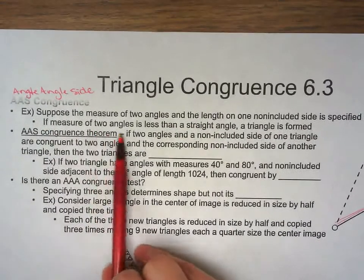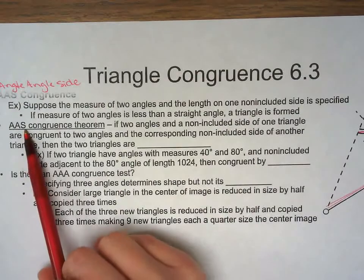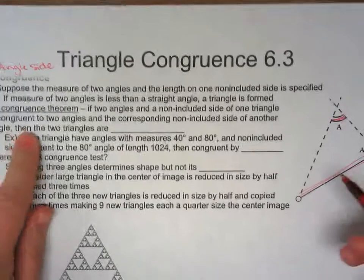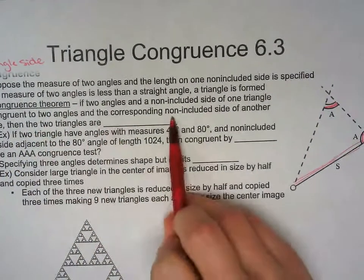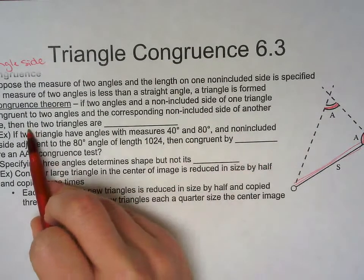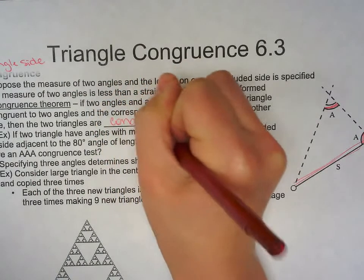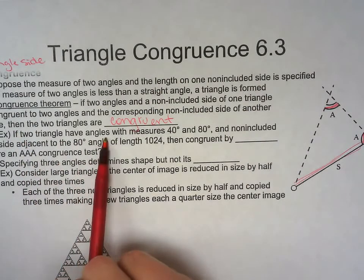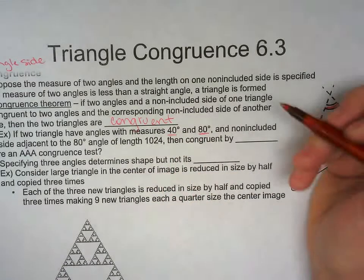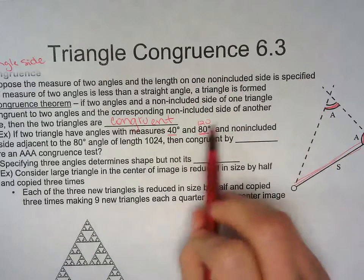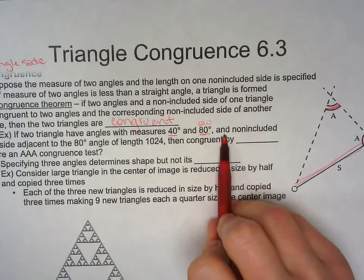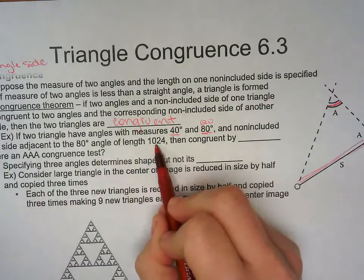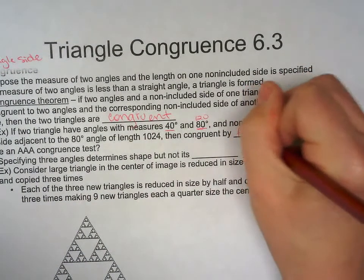If the measure of two angles is less than a straight angle, a triangle is formed. The angle-angle-side theorem: if two angles and the non-included side of one triangle are congruent to two angles and the corresponding non-included side of another triangle, then the two triangles are congruent. For example, if two triangles have angles of 40° and 80° (which sum to 120°, less than 180°) and a non-included side adjacent to the 80° angle of length 1024, then they are congruent by AAS.